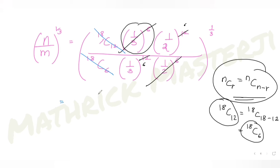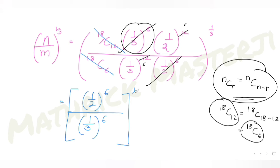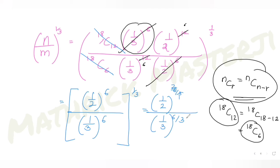After cancellation of 18C6, the (1/3) terms give (1/3)^(6−12) = (1/3)^(−6) → leaves (1/3)^6 in denominator cancelled partially, and (1/2) terms similarly simplify, leaving (1/2)^6 / (1/3)^6, all raised to the power 1/3. That gives (1/2)^2 and (1/3)^2 — i.e., 1/4 and 1/9.